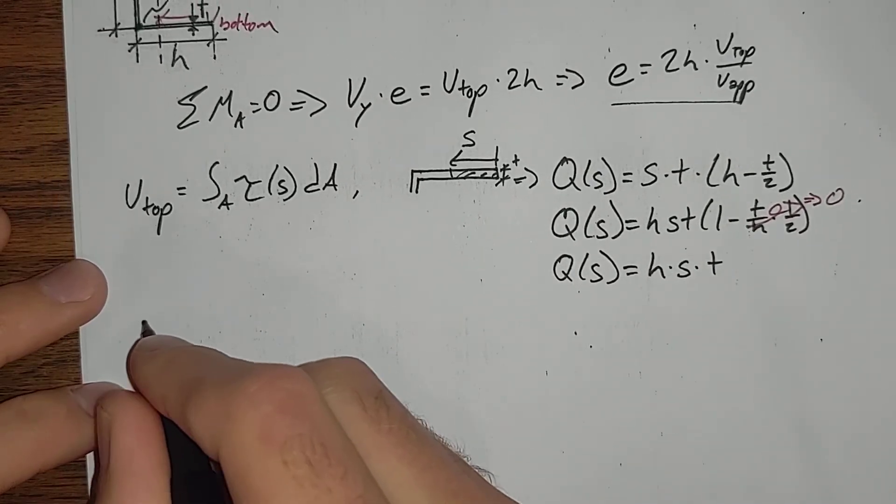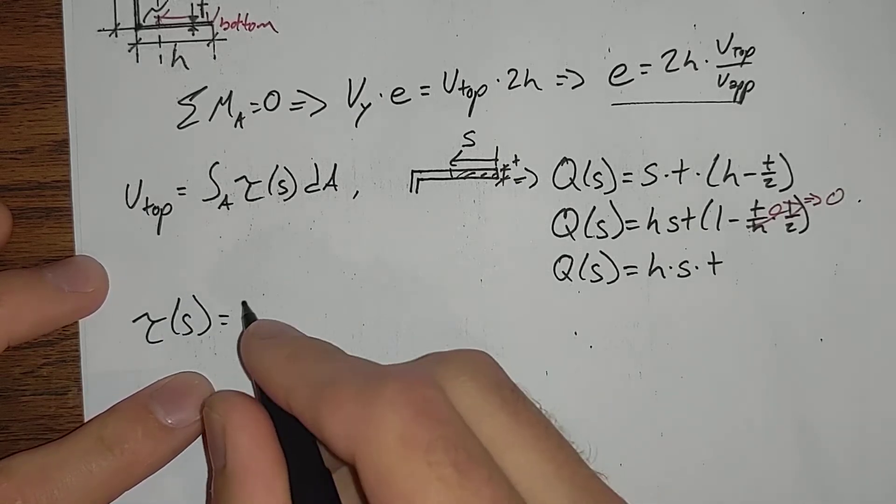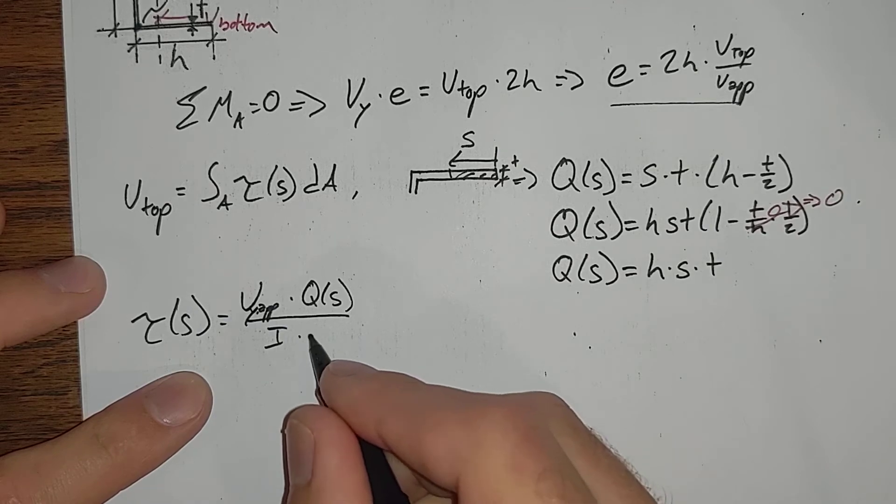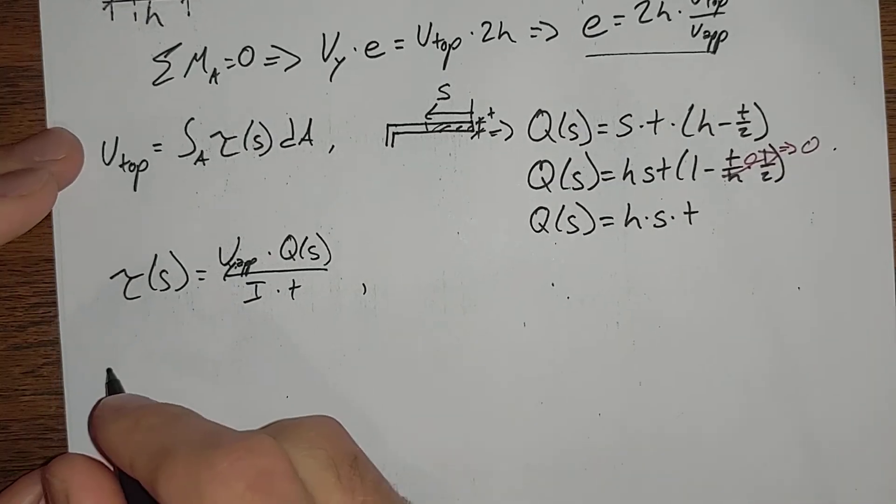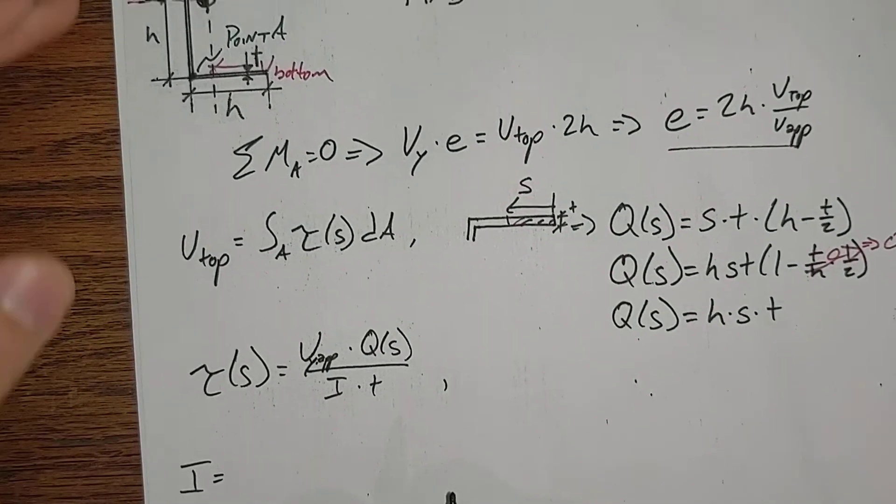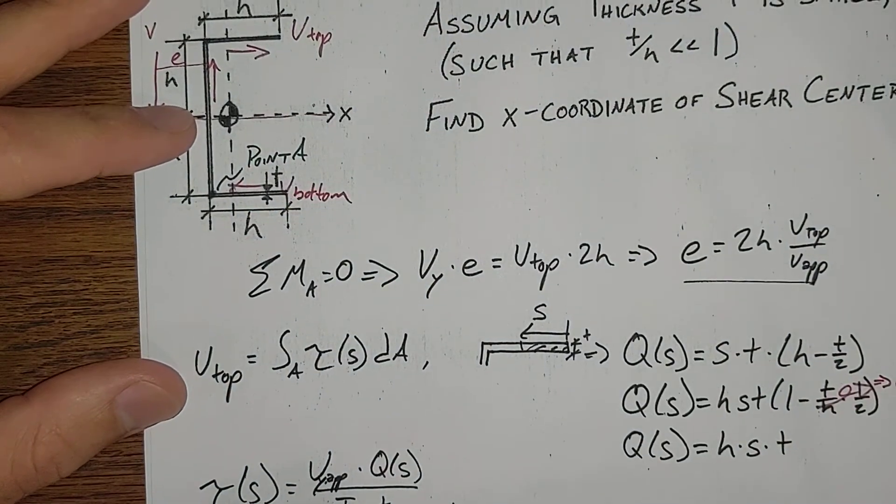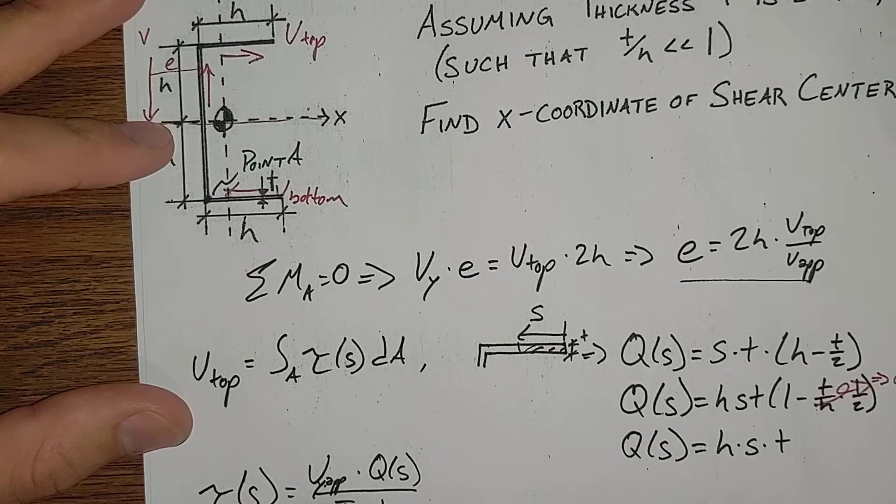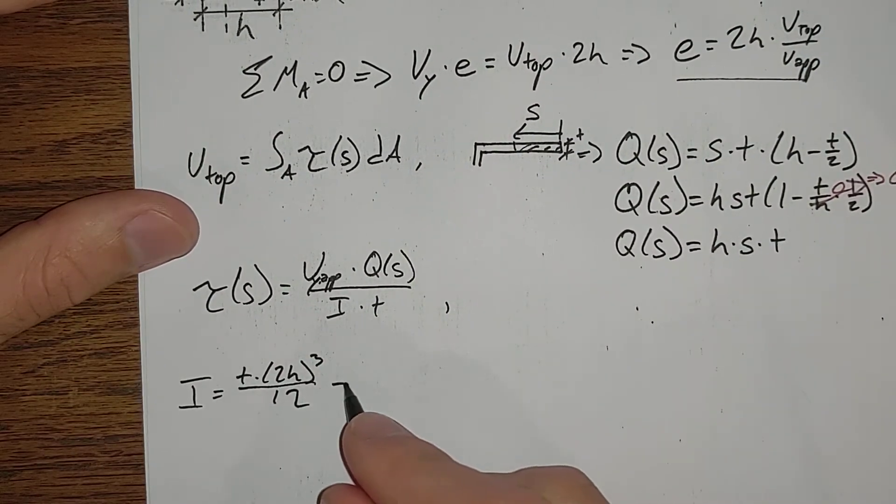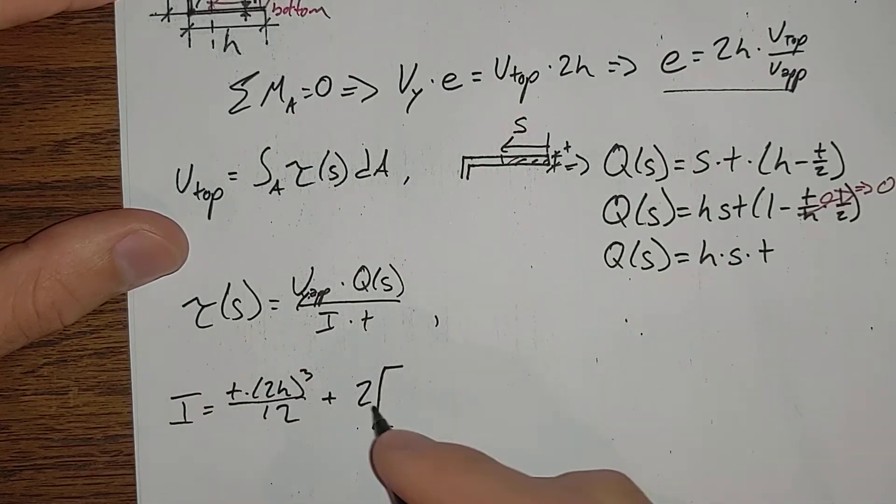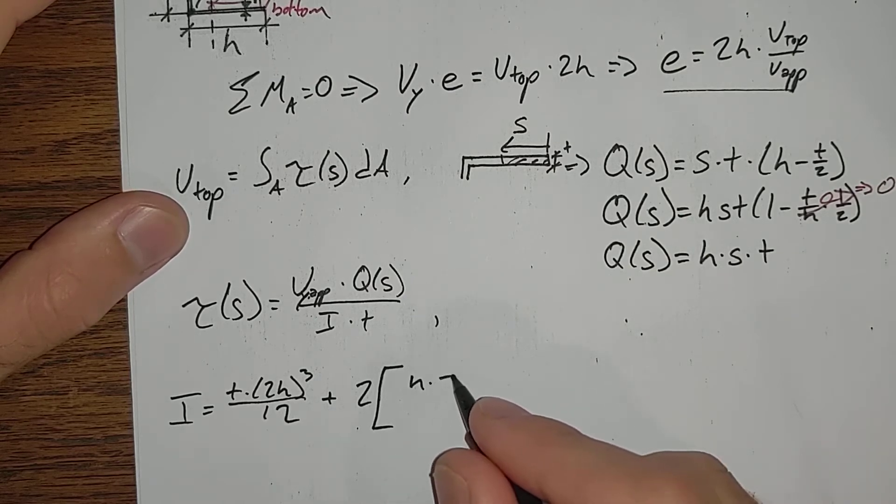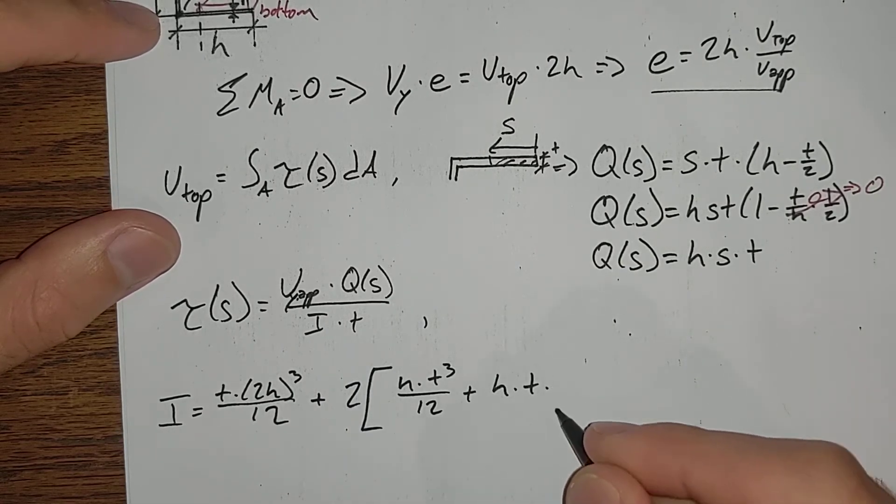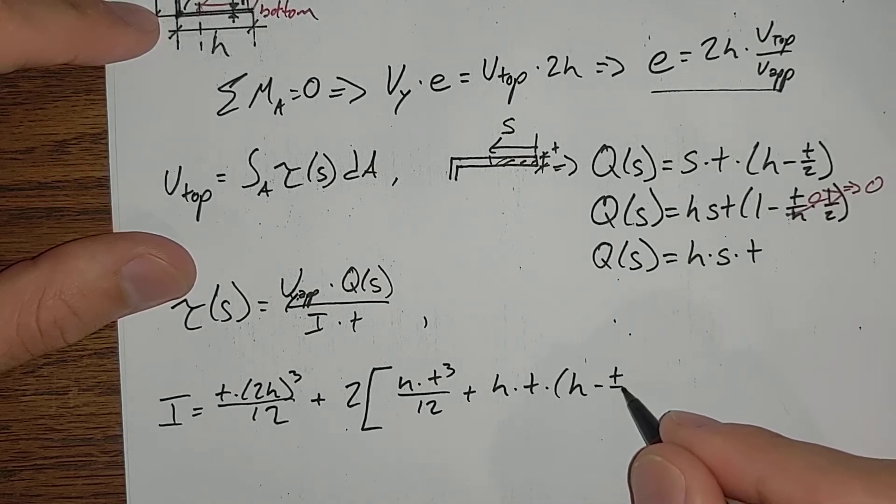Now, our tau of s is equal to V_applied times q(s) over I times t. We need an I. I is equal to, we're going to add up all of our shapes here. So, we've got base is t, height is 2h cubed divided by 12, plus 2, we've got the top and the bottom flange, h times t cubed over 12, plus, then we've got a distance term on here, so h times t times h minus t over 2 squared.